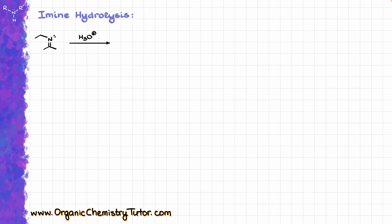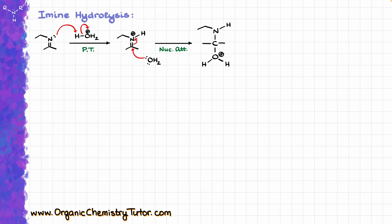To make the first step of the mechanism a little easier to show, I'm going to redraw H3O+ in the form H and H2O+, and I'm going to show that the first step is going to be a proton transfer. As a result of this proton transfer, we are going to get our protonated iminium ion. This iminium ion is fairly electrophilic, so it is going to react with nucleophiles in our solution, and the only reasonable nucleophile we have is going to be water. So I'll show the nucleophilic attack from water onto the electrophilic carbon of this iminium ion, which gives us the following tetrahedral intermediate.